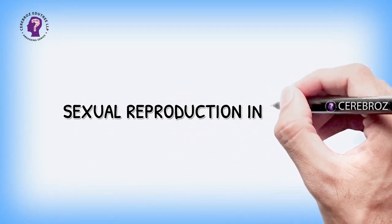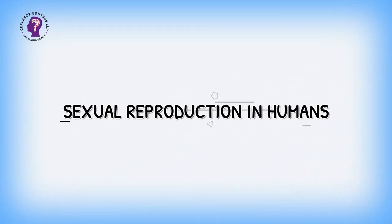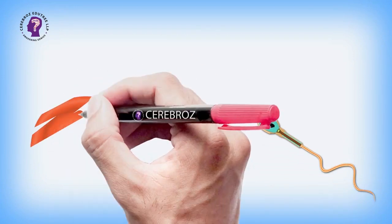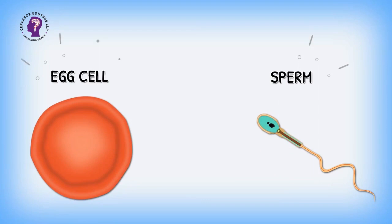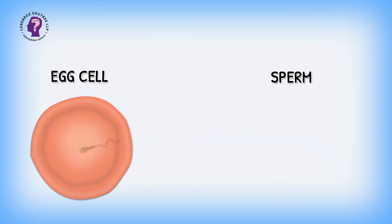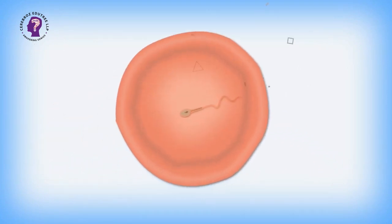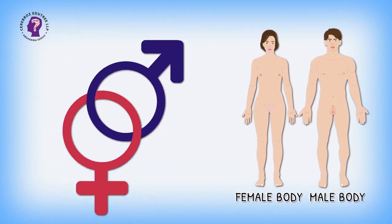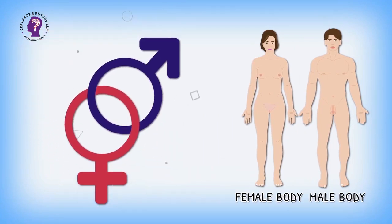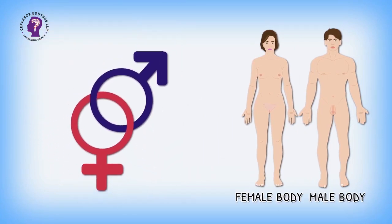What is Sexual Reproduction in Humans? For reproduction to take place in humans, the male and female germ cells have to be fused together. This can be achieved by joining the two bodies of individuals for internal transfer of germ cells for fusion.